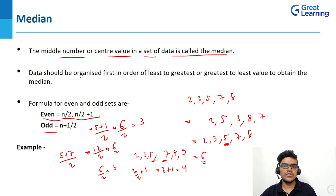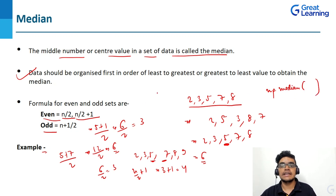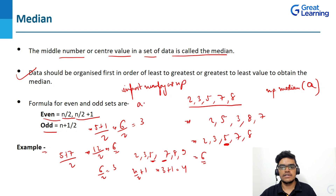Data should be organized first in order of least to greatest or greatest to least to obtain the median. To find the median using NumPy, write np.median(a), passing the array as a parameter. I'll import numpy as np, create a variable, and write np.array with the values.